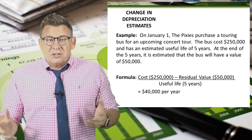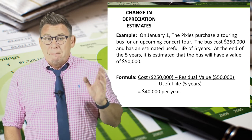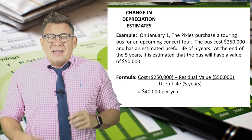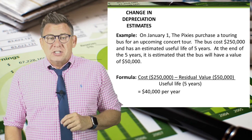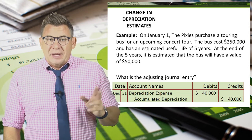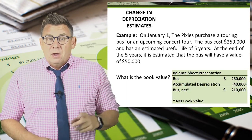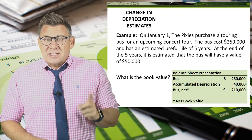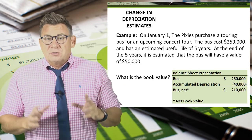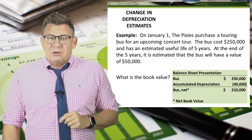The formula is cost minus residual value divided by useful life in years. So $250,000 minus $50,000 is $200,000. Divide that by five years and we get annual depreciation expense of $40,000 per year. We record the adjusting journal entry by debiting depreciation expense and crediting accumulated depreciation for $40,000. The book value is the cost of the asset minus its accumulated depreciation, so $250,000 minus $40,000 gives us a net book value of $210,000.